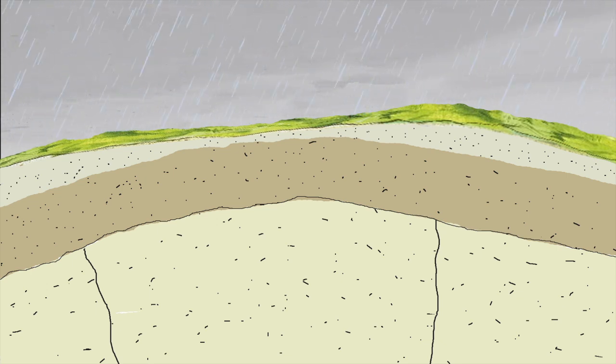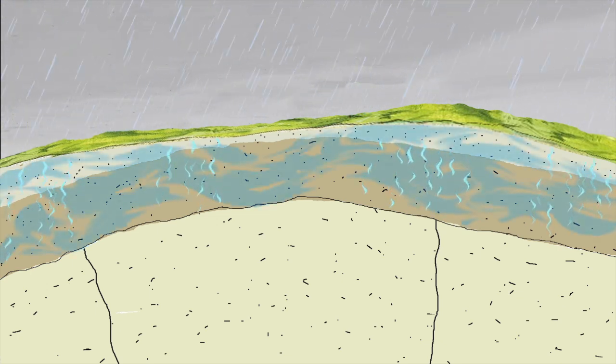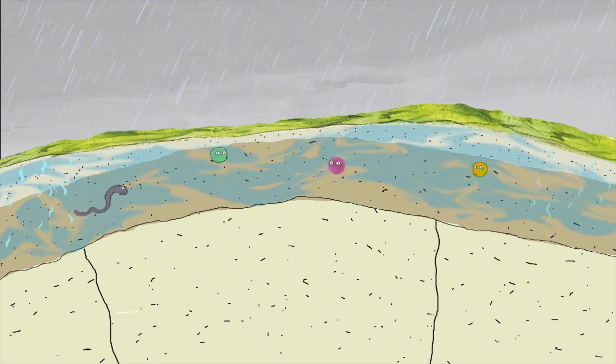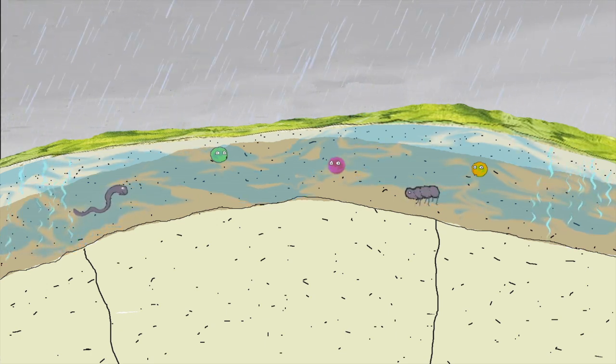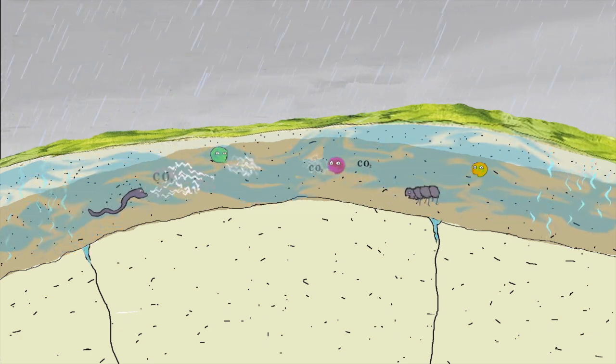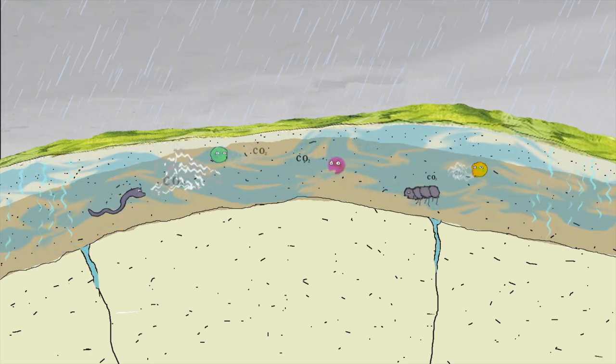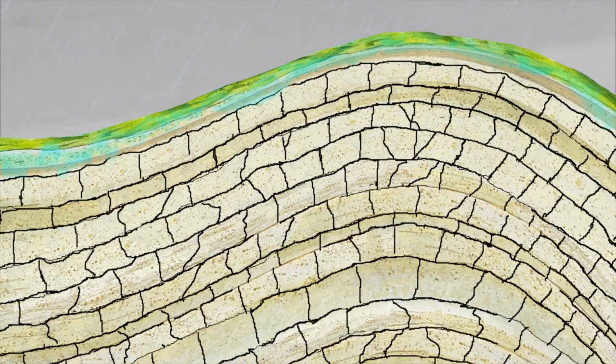Before reaching the rock, rainwater, already full of carbon dioxide naturally present in the atmosphere, will pass through a first layer of earth filled with creatures such as earthworms, insects and bacteria, all of which breathe, like you and I, and also emit carbon dioxide.